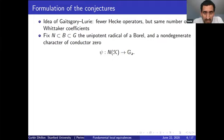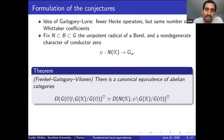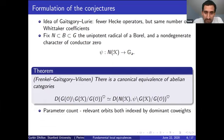If you write N for the unipotent radical of a Borel and psi for a Whittaker character of its loop group N(K), the theorem of Frenkel-Gaitsgory-Vilonen roughly says that when there's no kappa twist, the number of Whittaker coefficients is the same as the number of Hecke operators. More precisely, there's an equivalence between the spherical Hecke category and Whittaker D-modules on the affine Grassmannian G(K) mod G(O). On the left, orbits are indexed by dominant coweights. On the right, orbits are indexed by all coweights, but only the dominant ones support Whittaker sheaves.